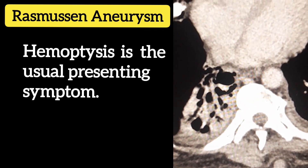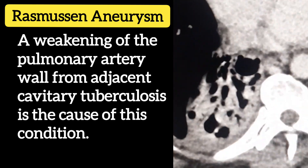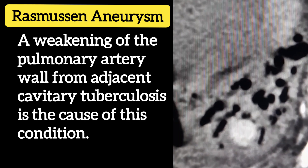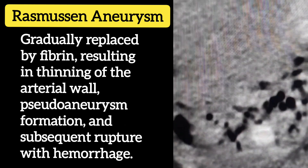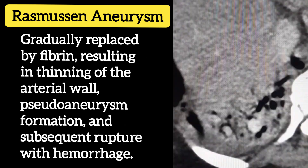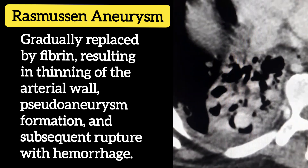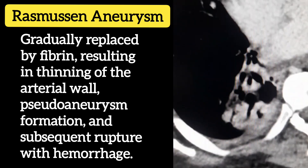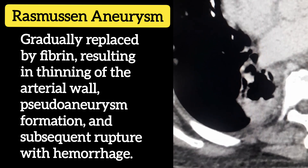A weakening of the pulmonary artery wall from adjacent cavitary tuberculosis is the cause of this condition. This is then gradually replaced by fibrin, resulting in thinning of the arterial wall, pseudoaneurysm formation, and subsequent rupture with hemorrhage.